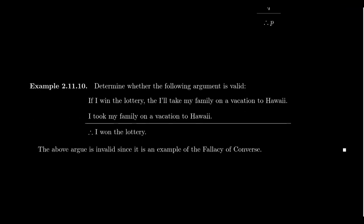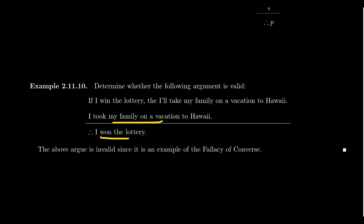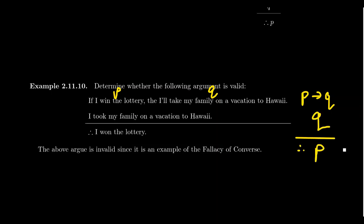Consider this example: if I win the lottery, then I'll take my family on a vacation to Hawaii. I took my family on a vacation to Hawaii. Therefore, I won the lottery. If P is winning the lottery and Q is going to Hawaii, the first statement is P implies Q, the second statement is Q, and the conclusion is P. This is an example of the fallacy of converse, and therefore this is an invalid argument.